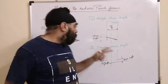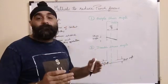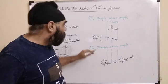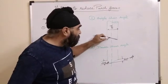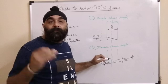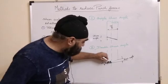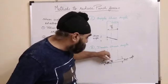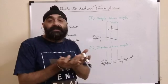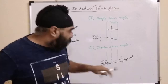Another method to reduce cutting force is double shear angle. Here we have given single shear angle. When the cutting force is high, you can give shear angle to both sides from center.